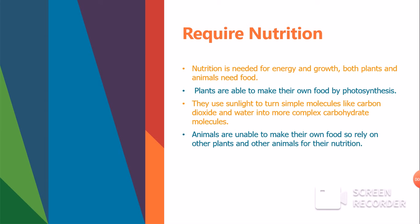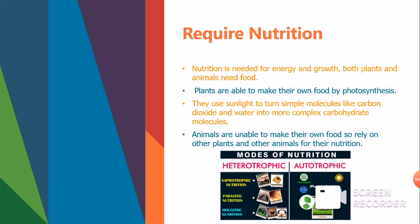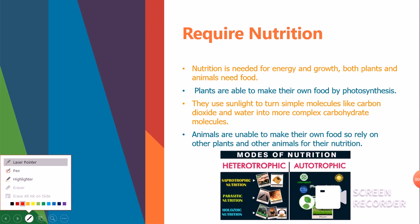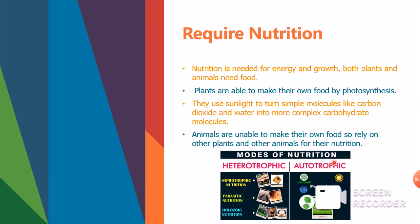Animals are unable to make their own food, so they rely on other plants and animals for their nutrition. Plant nutrition is called autotrophic nutrition, carried out by the process of photosynthesis. Humans and animals have different types of nutrition depending on what they eat.